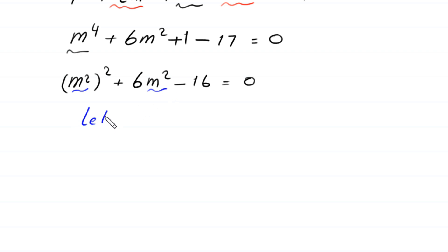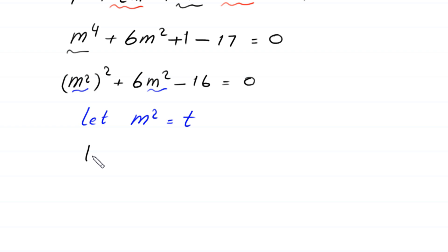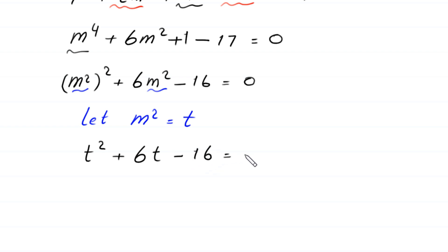We let m squared equal t and substitute into the equation, which becomes t squared plus 6t minus 16 equals 0.